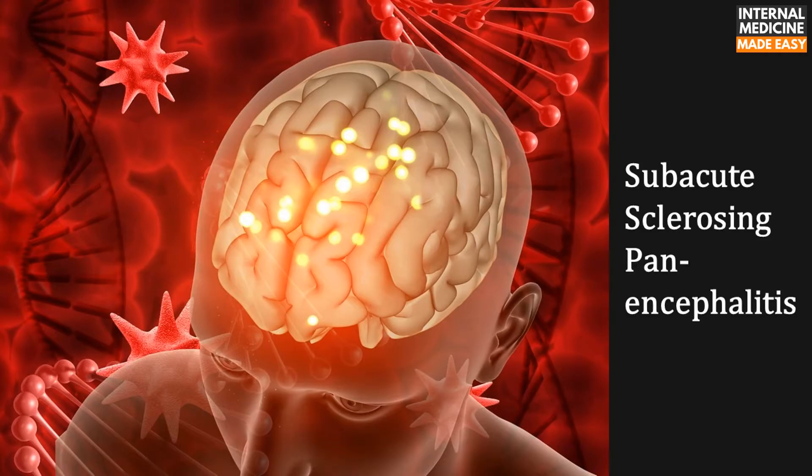Encephalitis means inflammation of the brain. In the white matter, there is degeneration of myelin and axons with fibrous gliosis. Due to the presence of this fibrous gliosis, the term sclerosing encephalitis was given. With the introduction and widespread use of the measles vaccine, it has practically disappeared.